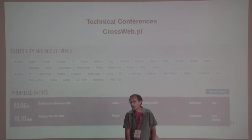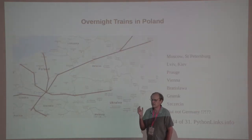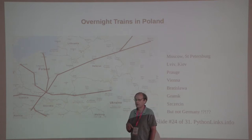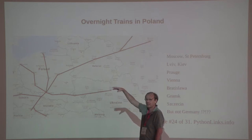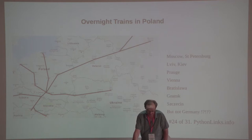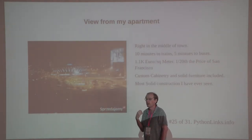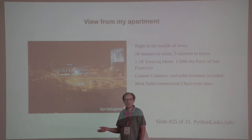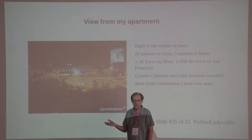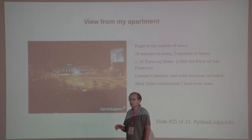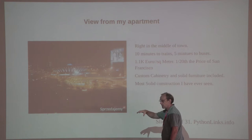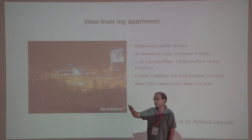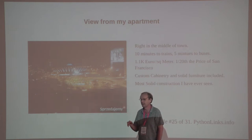The big conference cities are Kraków, Warsaw, and Wrocław — Wrocław is a lovely city. In Germany they've closed down the overnight trains, and France doesn't have many, but I often go to Python conferences by overnight train — I get there in the morning while rested. I got an apartment right in the center of town, five minutes to the bus station, ten minutes to the train station. It was only 1,100 euros per square meter, with really solid construction — the most solidly built building I've ever seen, because the communists built it. It was complete with custom cabinetry, towels, sheets, coffee, tea, pots and pans — truly turnkey.